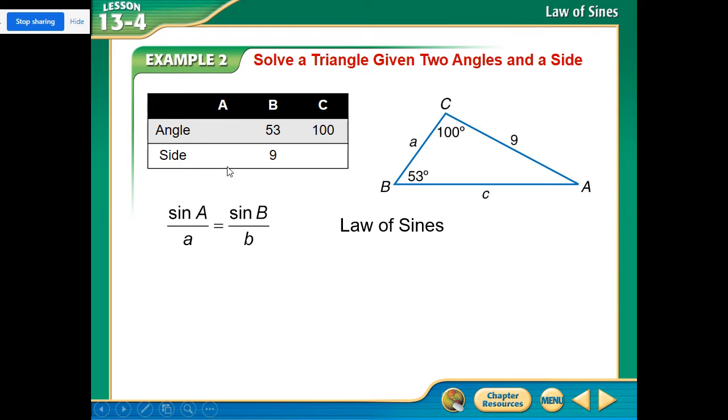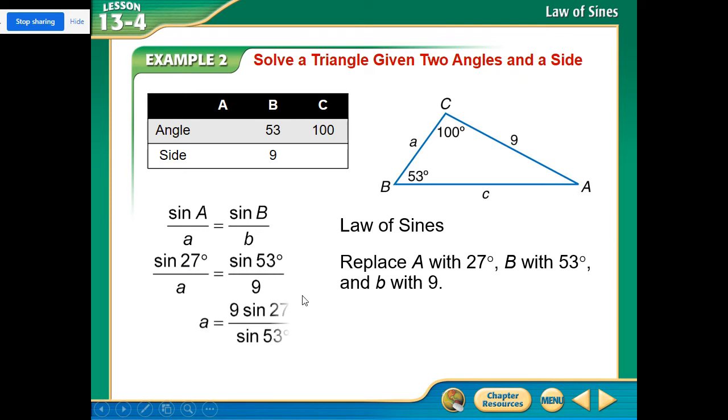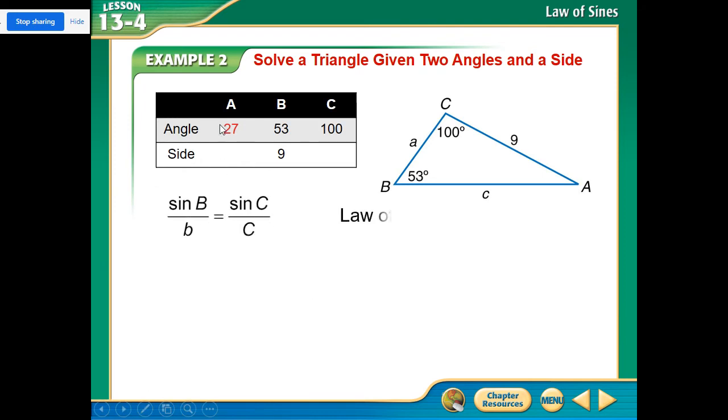So now we can go ahead and find out what A is by using this pair. Notice the pair that we have, 53 and 9. All right, so 53 and 9 goes with sine of 27 and A. So what are we going to cross multiply? We're going to type in 9 sine 27 in our calculator. Hit the equals and then divide it by the sine of 53. 9 sine 27 divided by the sine of 53 gives us a value of 5.1.